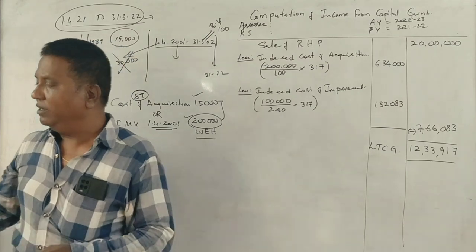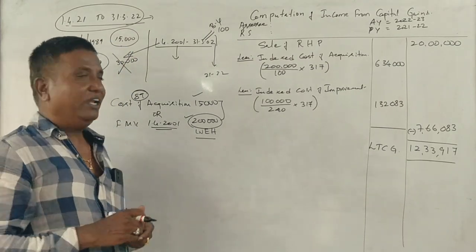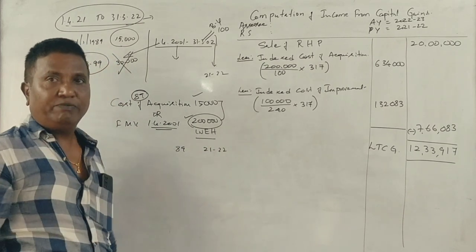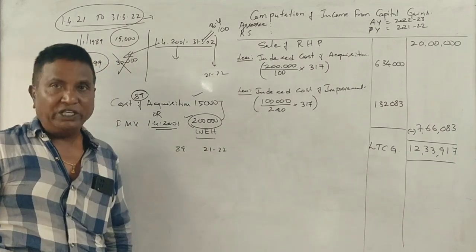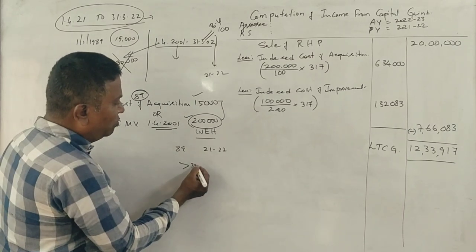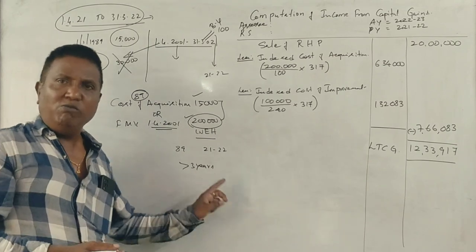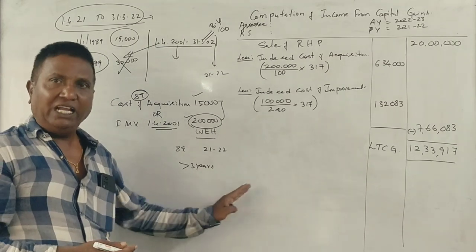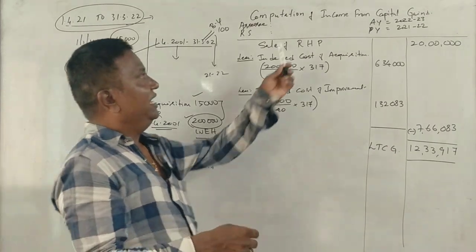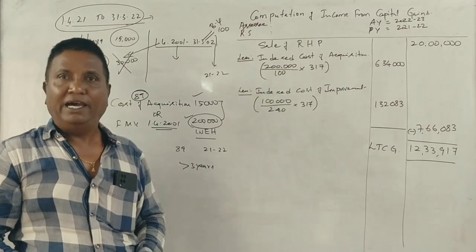This is long-term capital. How is this long-term? Purchase is 1989, sale is 2021-22. It's more than 30 years old. For capital gain and income from house property, capital gain, if you hold for more than 3 years, it will be long-term.